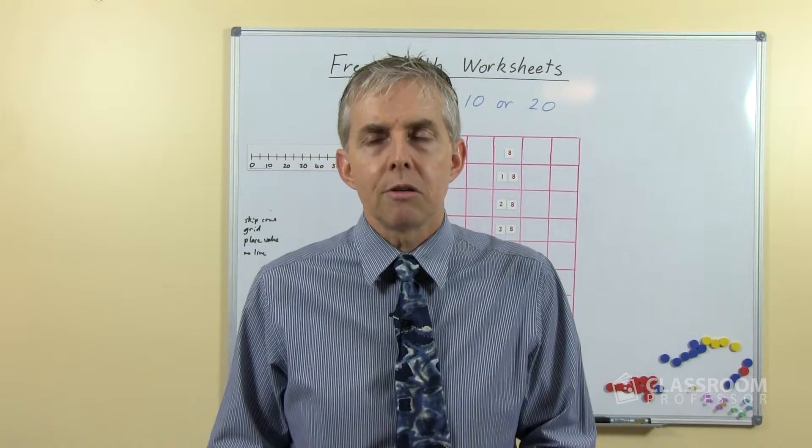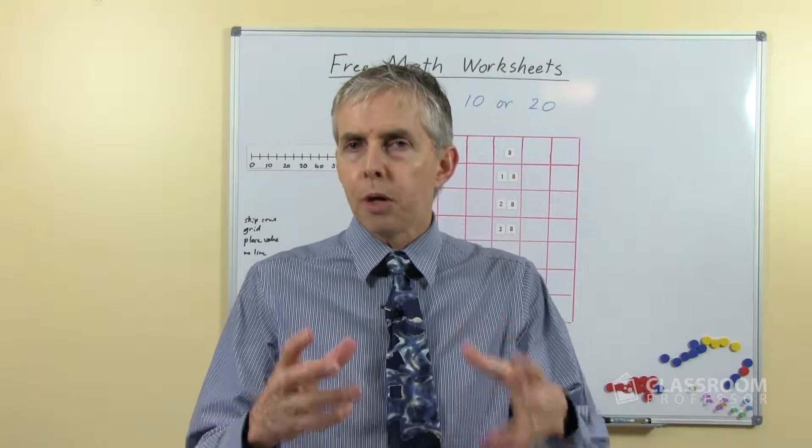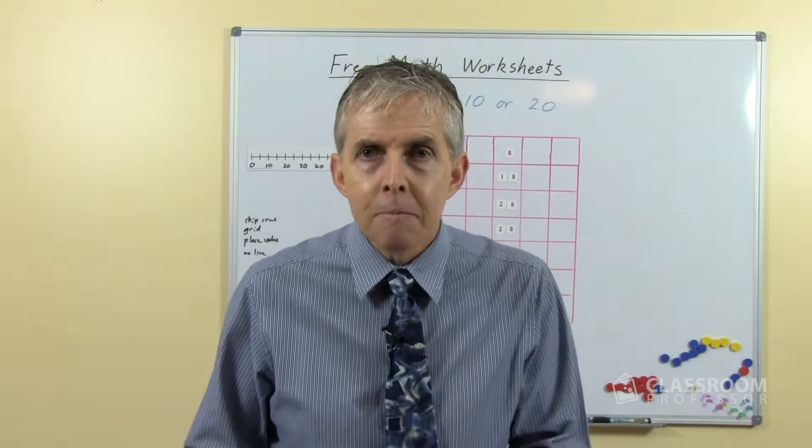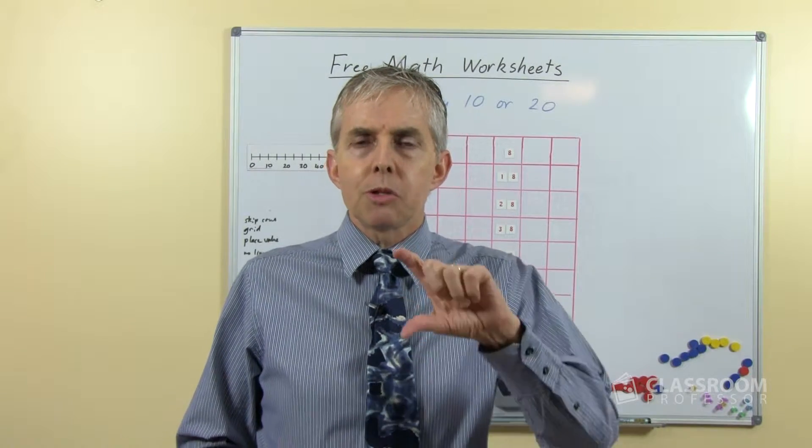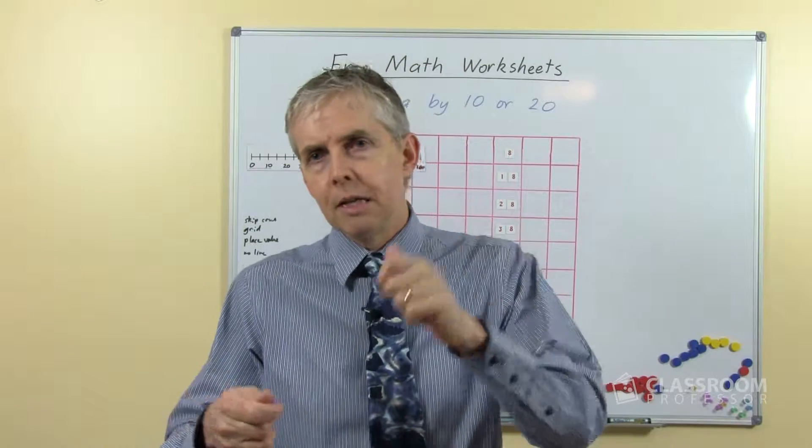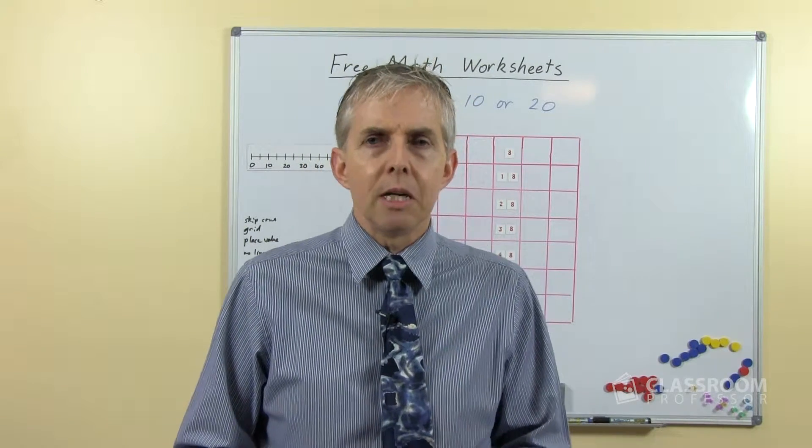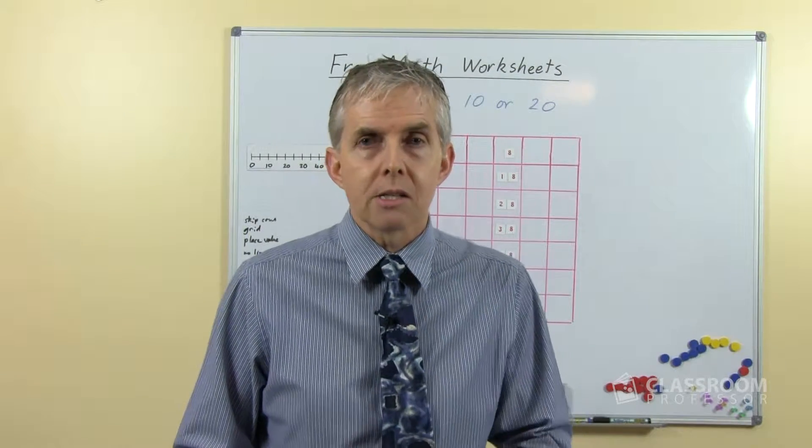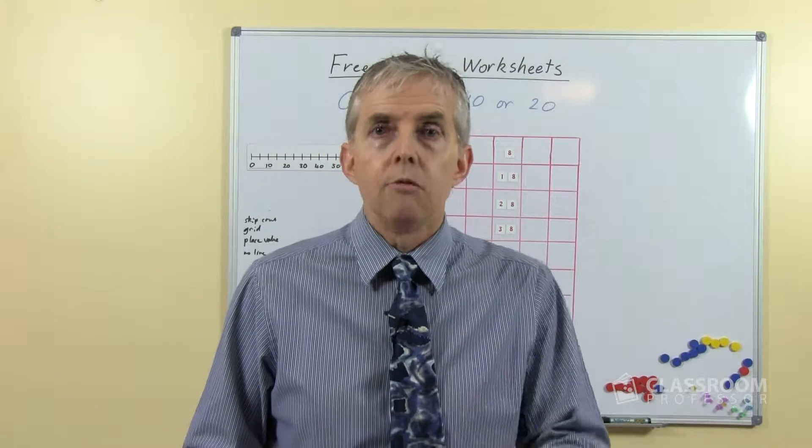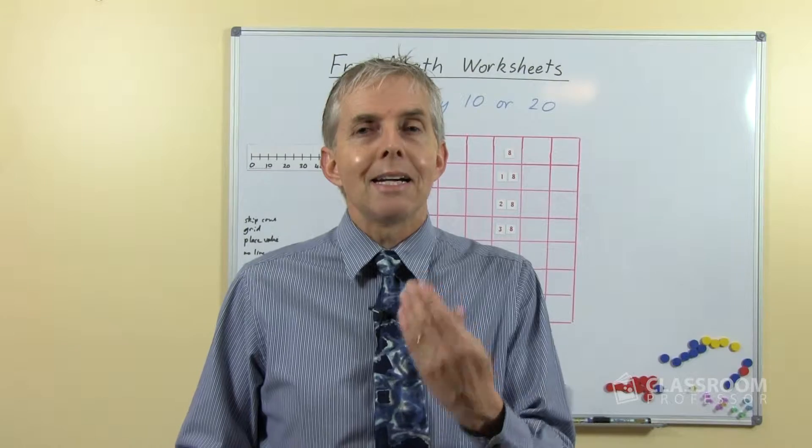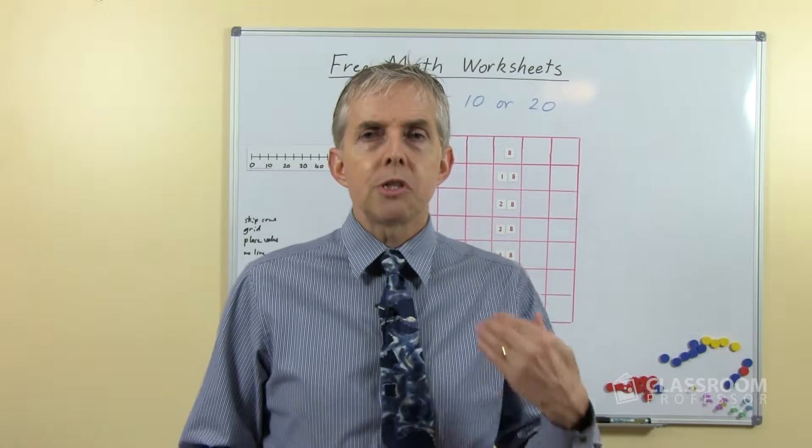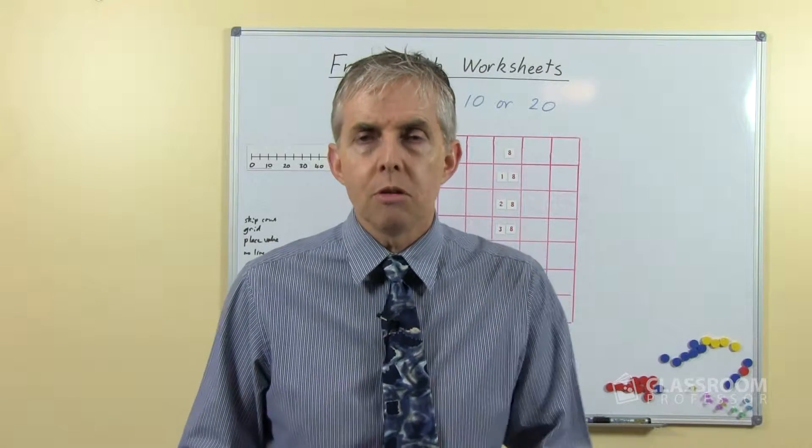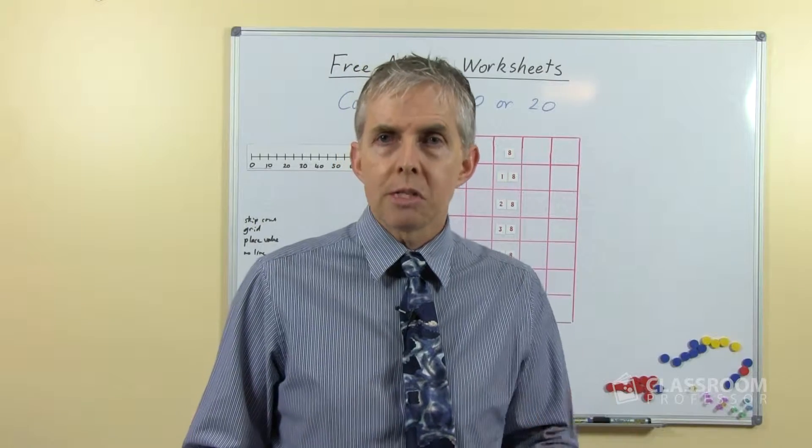So we could start with base 10 materials and ask them to put out the blocks to show the number 6, and then ask them to show the number 16, which is a difficult number because we say 6 first but we write the 1 first and they have to really think about what 16 really means. But they'll remember they have to put a 10 there, then do 26, do 36, do 46. Write them down on the whiteboard in a sequence and ask the students what the difference is. What is changing as we move into the next number in the pattern? What do you notice? What is the same? What is different?